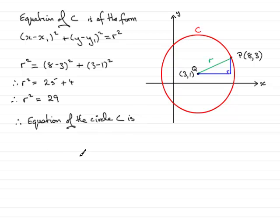And we know that it's going to be x minus the x coordinate for the center, so that's 3 all squared, plus y minus the y coordinate of the center, 1 all squared, equals the radius squared, which we now know is 29. So there you have the equation of the circle C.